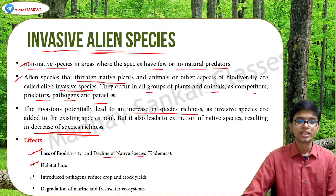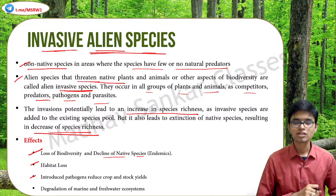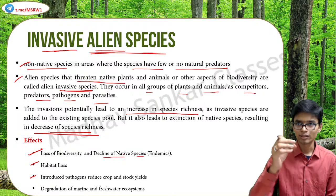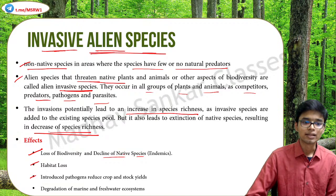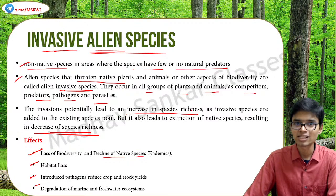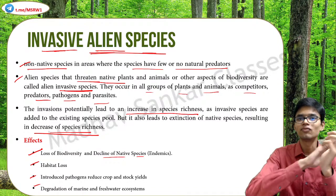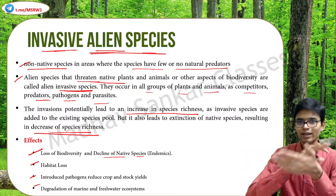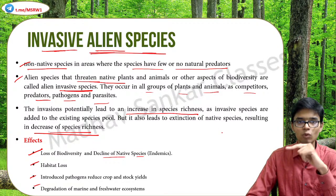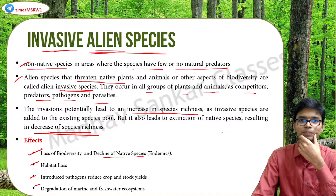The effects of invasive alien species on the environment include: loss of biodiversity and decline of native species, habitat loss, introduction of pathogens that reduce crop and stock yields, and degradation of marine and freshwater ecosystems. Water hyacinth is one of the best examples of an invasive plant species - if you put one in an aquatic region, within a week it can fill the entire region, and within a month the entire water body would be green. It has a very high reproduction rate that destroys the entire aquatic ecosystem.